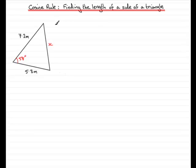You've got x squared and it equals the sum of the squares of the other two sides. In other words, 7.2 squared plus 5.3 squared. It doesn't matter if you write 5.3 squared plus 7.2 squared, you're going to get exactly the same answer. x squared equals the sum of the squares of the other two sides.